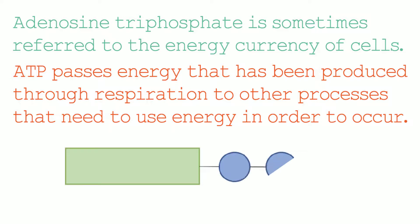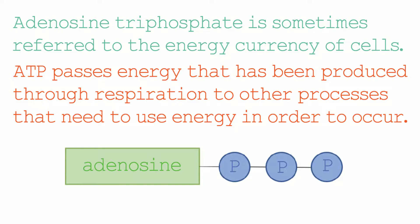But what is ATP actually made out of? ATP is made up of adenosine, which is an organic molecule, and three phosphate molecules, which are inorganic molecules. ATP is short for adenosine triphosphate, so that means there's one adenosine molecule, and tri before the phosphate means that there's three.